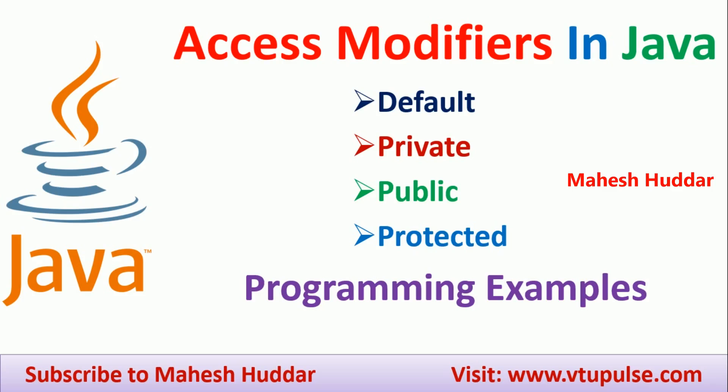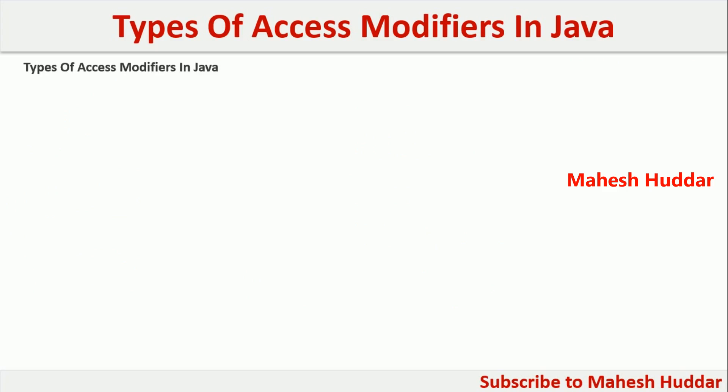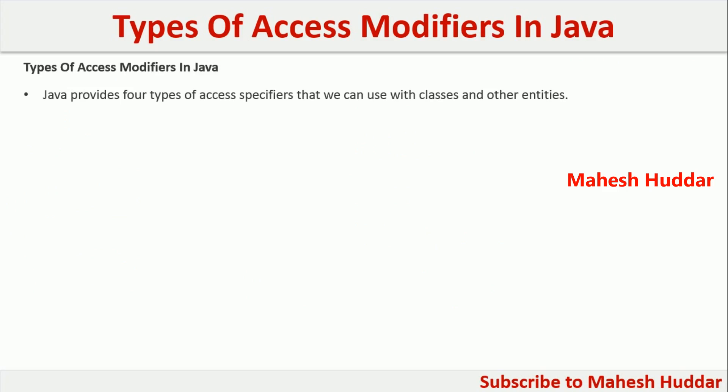Welcome back. In this video, I will discuss what are the different access modifiers available in Java and how to use these access modifiers with simple programming examples. Java provides four types of access specifiers that can be used with classes as well as other entities of a class.